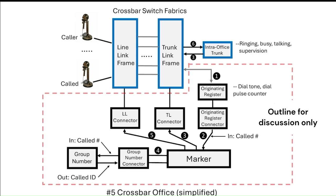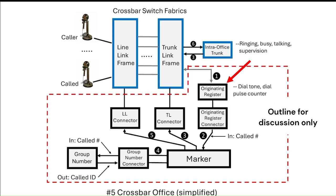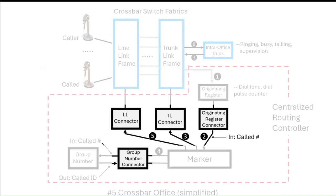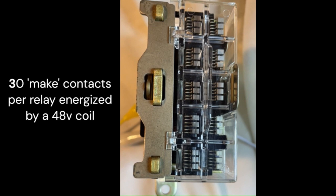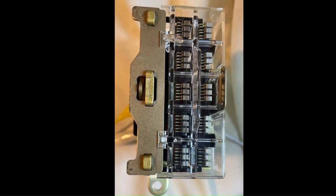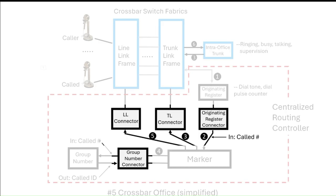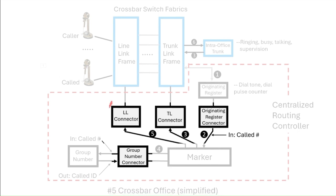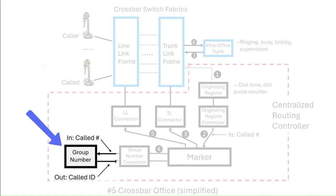The other elements include the originating register, which provides dial tone and remembers the dial digits, then is freed. In the number five system there are eight types of connectors; only four are shown here. They are typically made of large 30-contact relays and temporarily connect a marker with other equipment for control purposes. The four connectors are: the line-link connector, the trunk-link connector, the group number connector, and the originating register connector. There is also a group number device, whose operation will be explained in a moment.